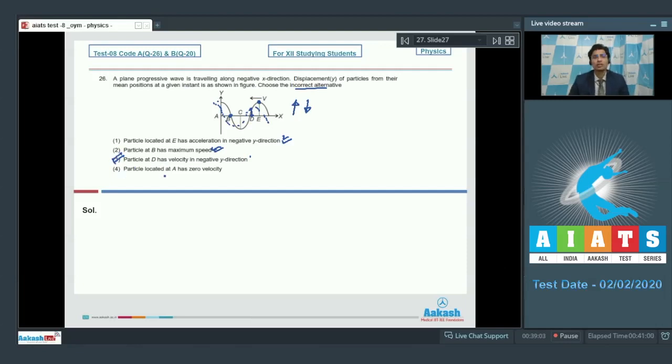You can always check option number 4 as well that the particle located at a has 0 velocity. This is also incorrect dear students because the particle located initially here that is a will actually move downwards and reach here. Therefore, for question number 26, option number 3 is the correct answer. Now let us proceed to question number 27.